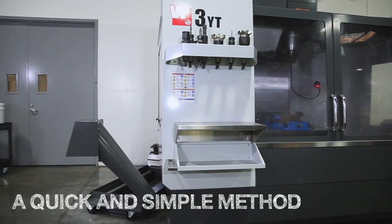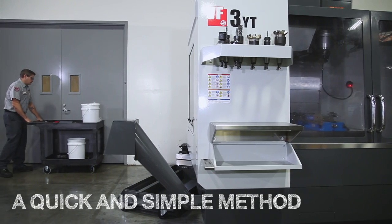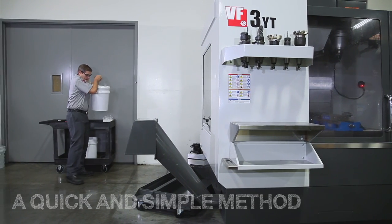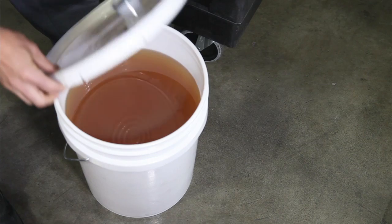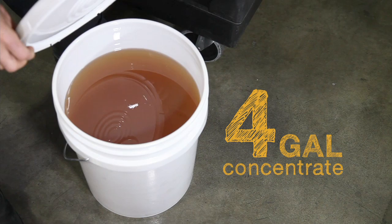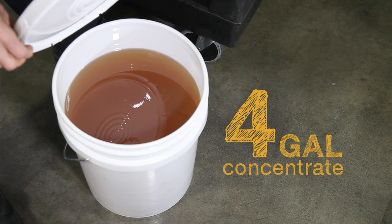Let's look at a quick and simple method to mix your coolant. We'll be filling the tank on this VF3YT. For the Haas 55-gallon tank, you will need 4 gallons of concentrate to put your coolant in the middle of that 6 to 10 percent range.